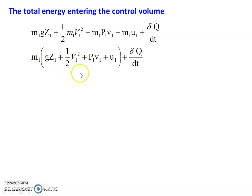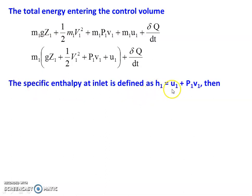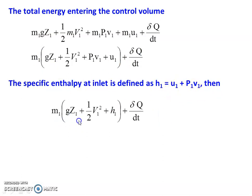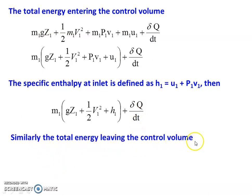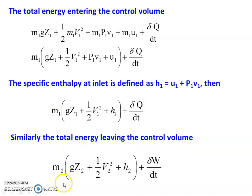Since H1 equal to U1 plus P1 V1, we substitute: total energy entering is M1 into (G Z1 plus half V1 squared plus H1) plus del Q by DT. Similarly, total energy leaving the control volume is M2 into (G Z2 plus half V2 squared plus H2) plus del W by DT.